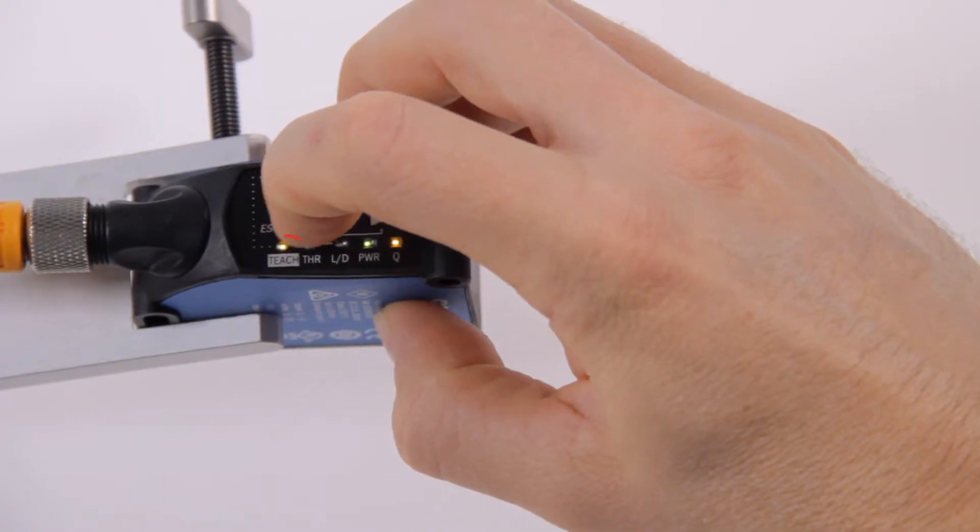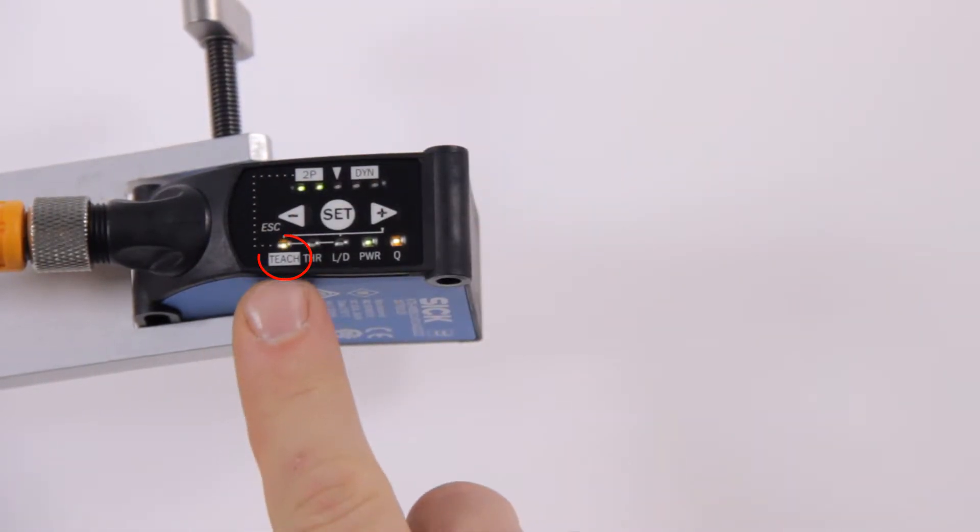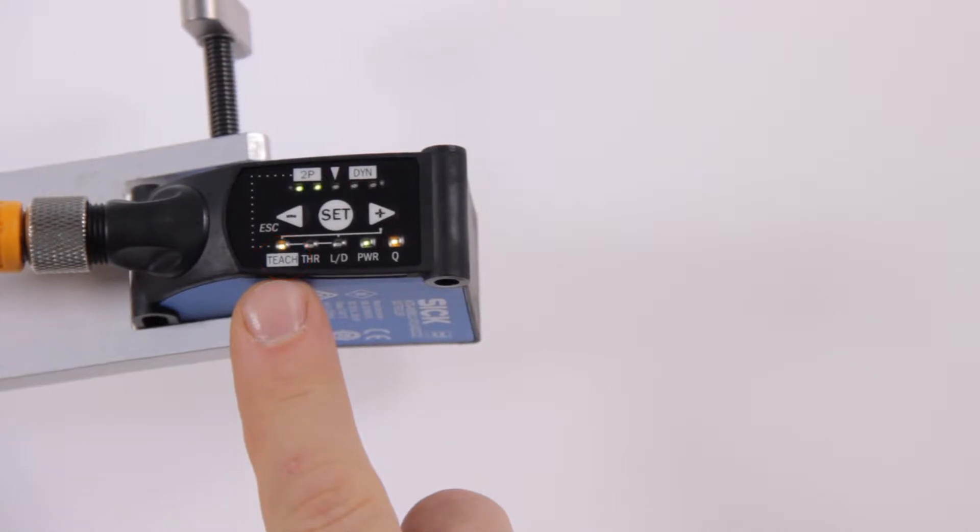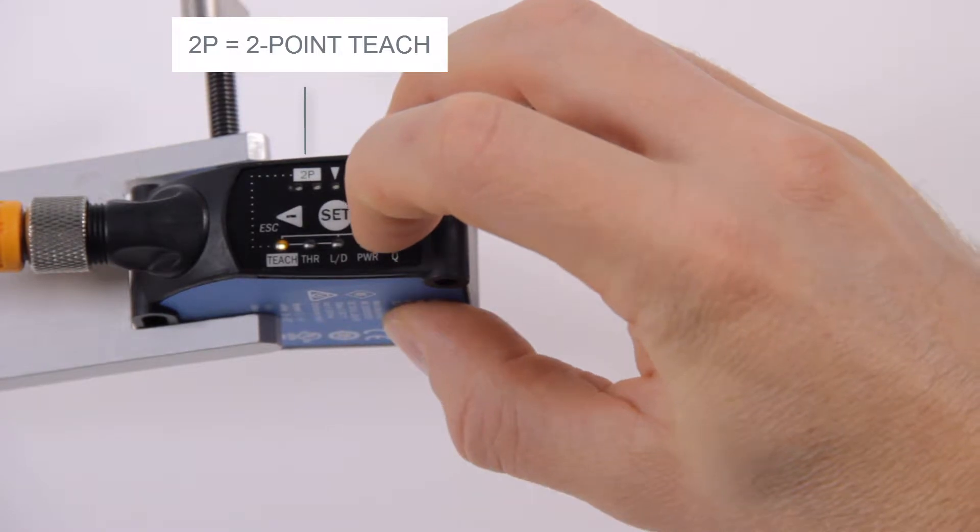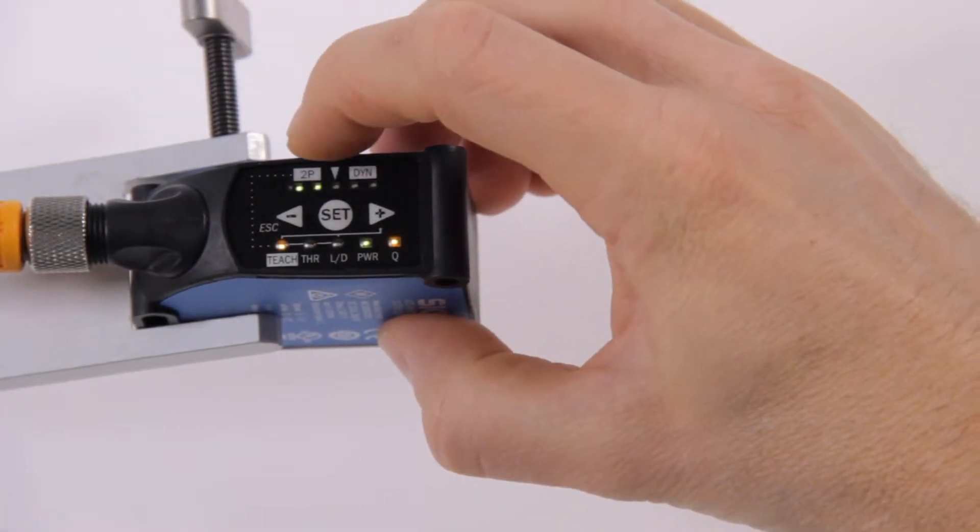The yellow LED indicates the current function. Confirm with SET. Use the plus and minus buttons to navigate to 2P which is the two-point teach and confirm with SET again.